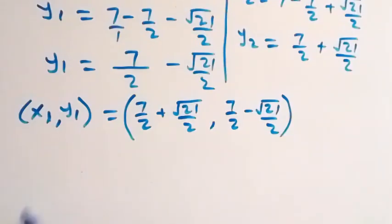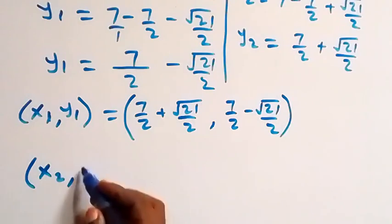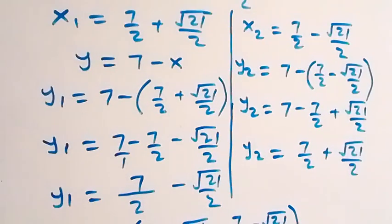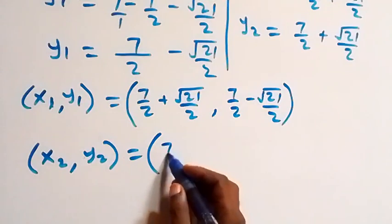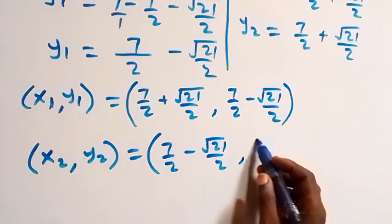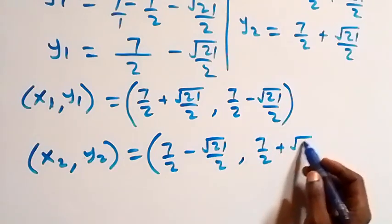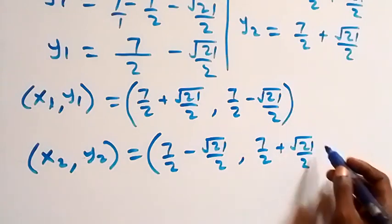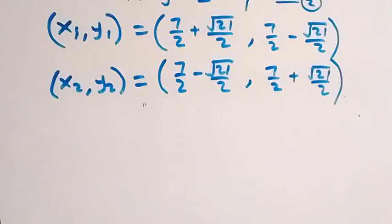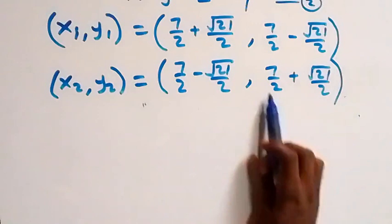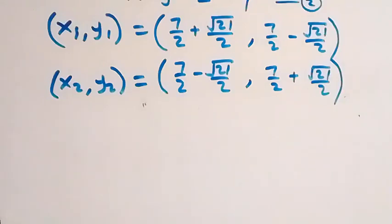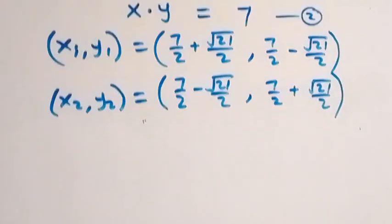So the second set of solutions is (x₂, y₂) equals (seven over two minus root 21 over two, seven over two plus root 21 over two). Notice that the value of y₁ equals x₂ and the value of y₂ equals x₁ — the solutions are symmetric. Now let's check if these satisfy the given problem.